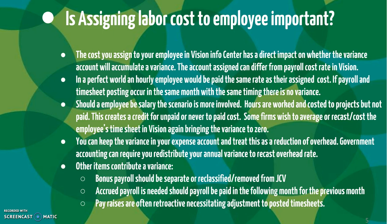Should an employee be salaried, the scenario is more involved. Hours of work can be costed to the project but not paid, which creates a credit for unpaid — or never-to-be-paid — cost in your job cost variance account. Some firms wish to average or recast the cost on the employee's timesheet in Vision, bringing the variance to zero. You can keep the variance in your expense account and treat this as a reduction of overhead — it's not a reduction of total cost, just of overhead. Government accounting can require you to redistribute your annual variance to recast your overhead.